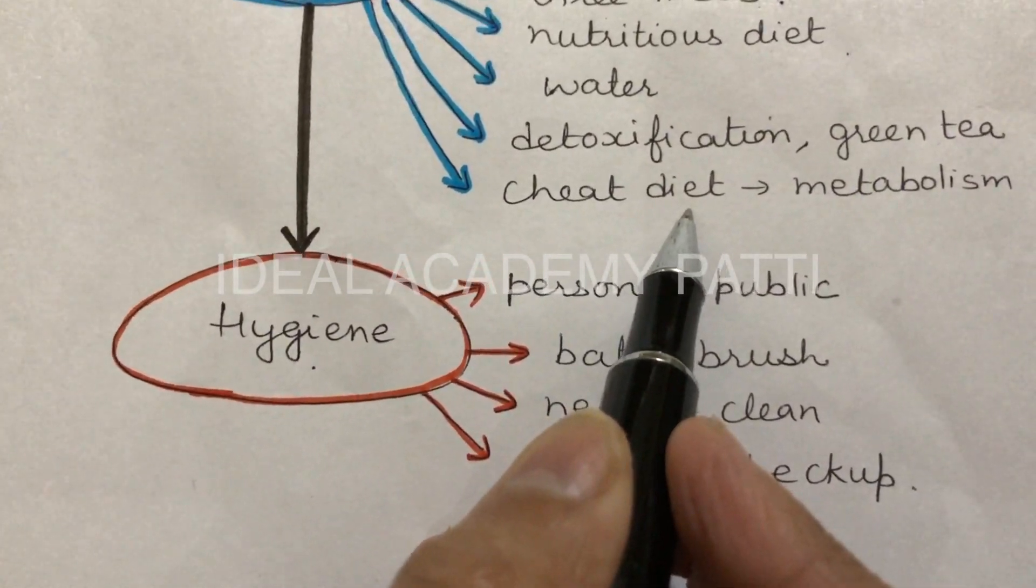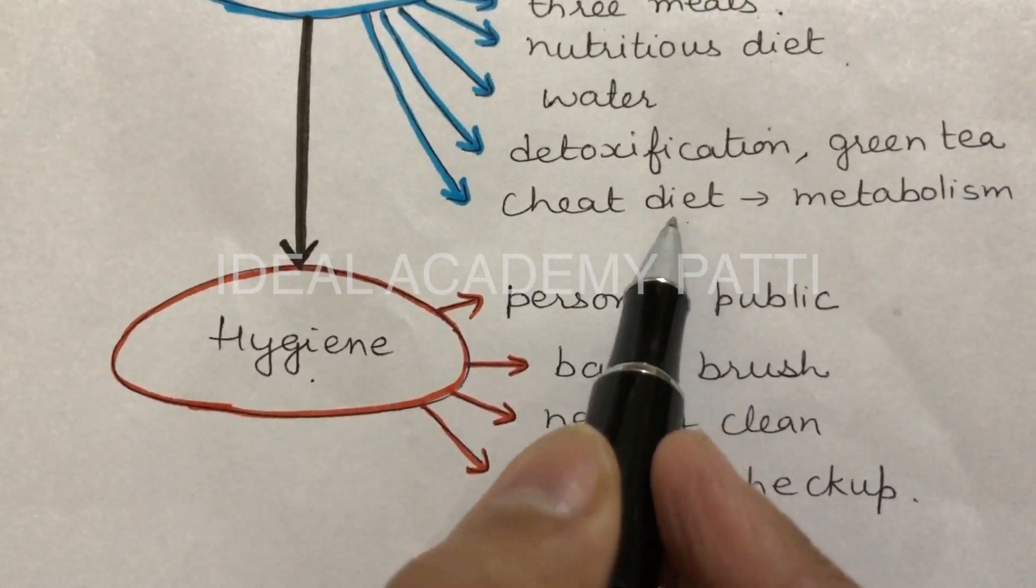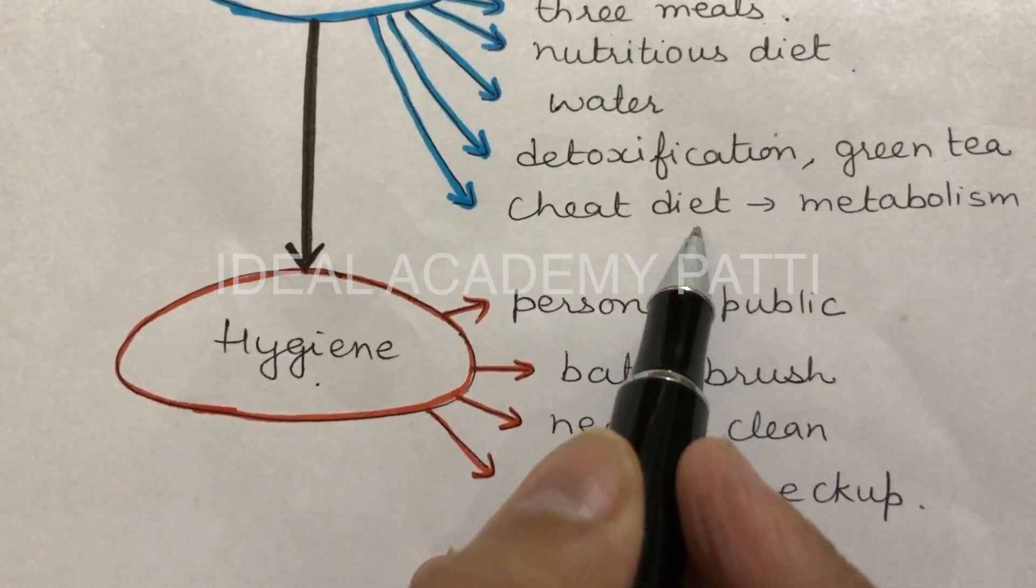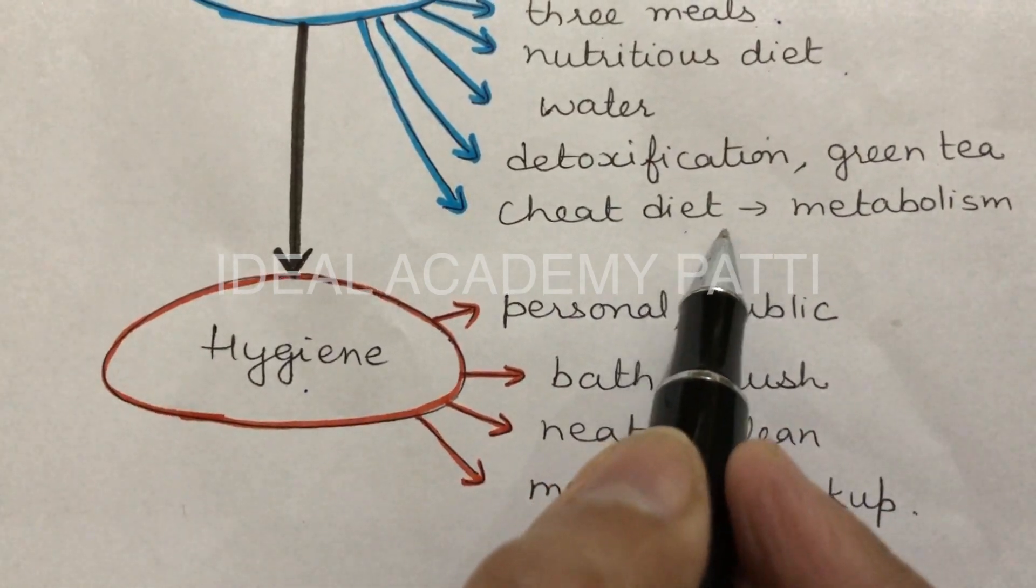So I usually have cheat diet once a month. In my cheat diet I eat whatever I want to eat, but I take care that it is not loaded with empty calories but it provides me good nutrition. I take cheat diet because I want to have my metabolism active.